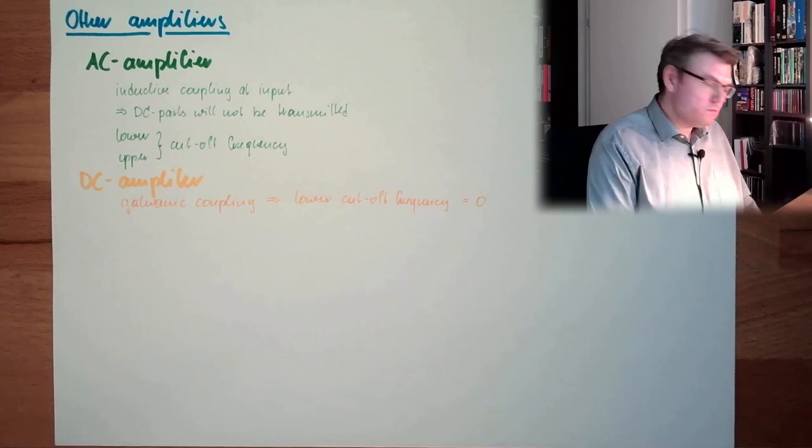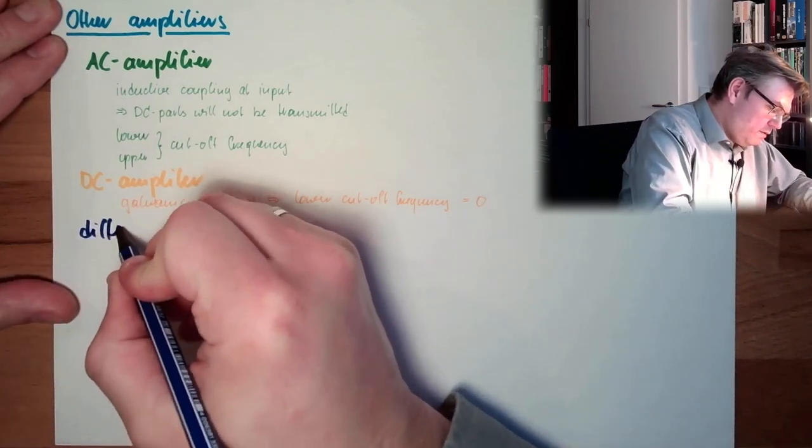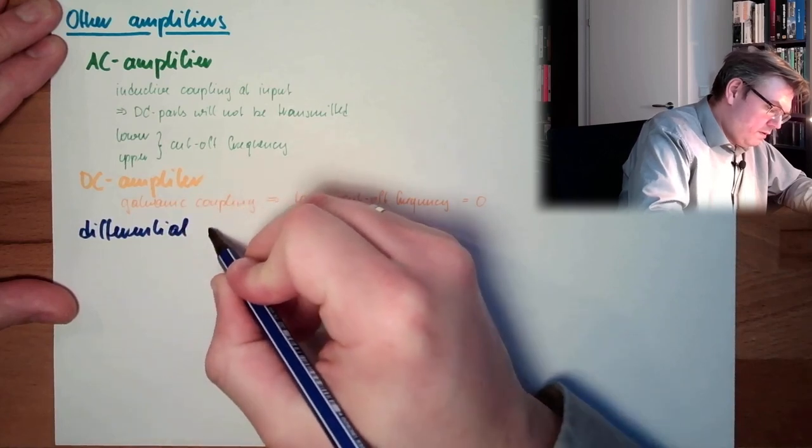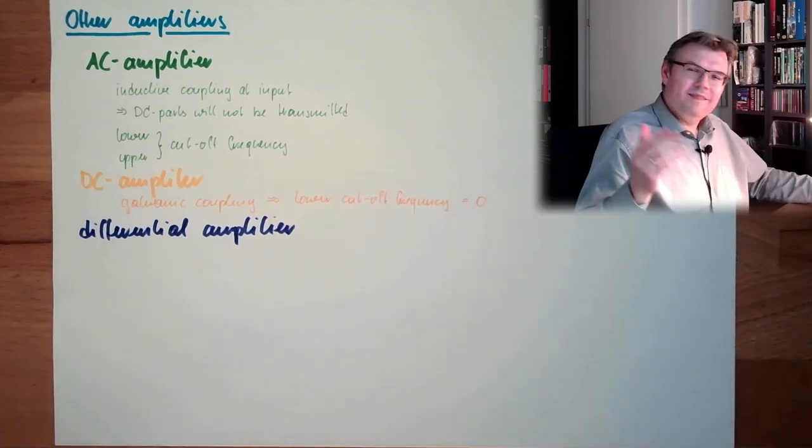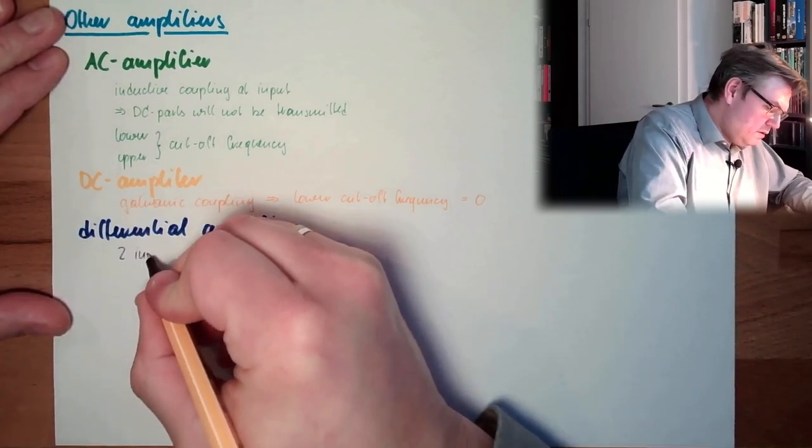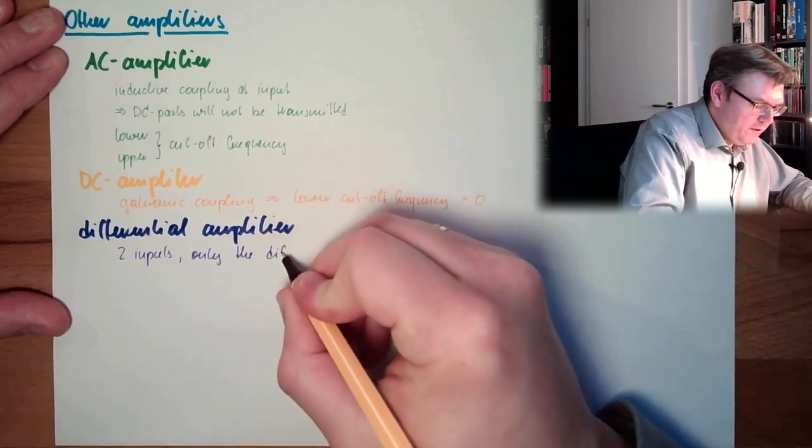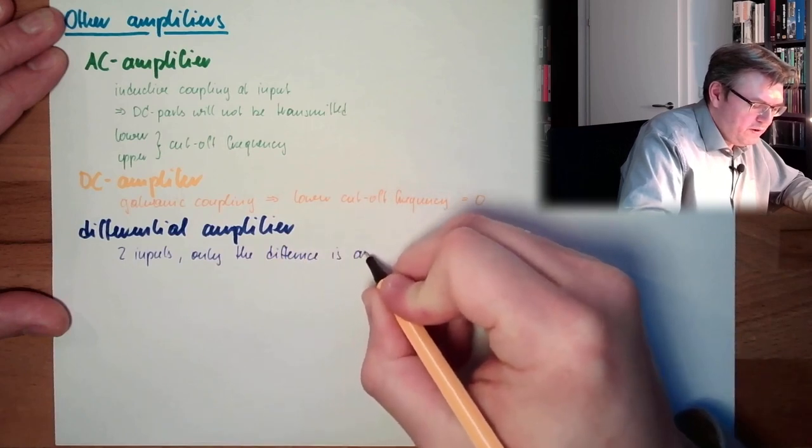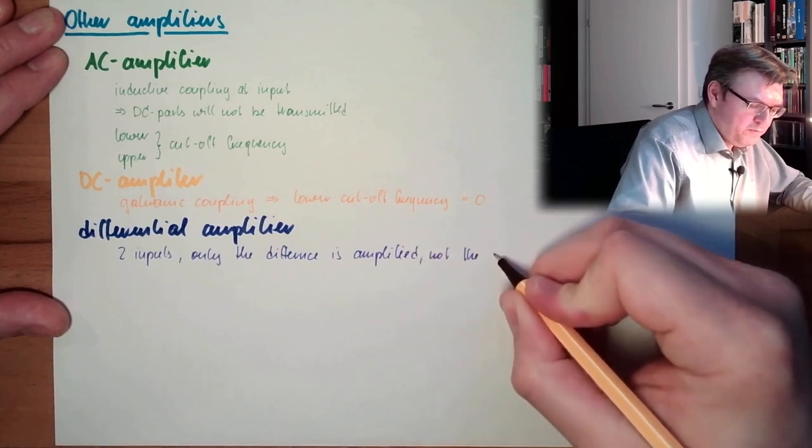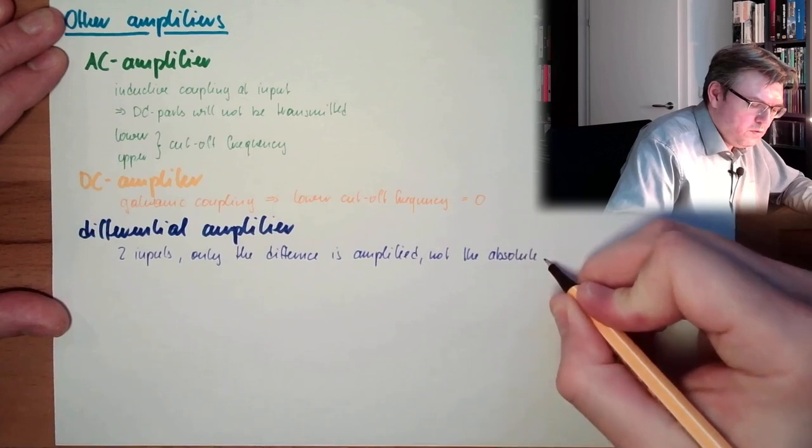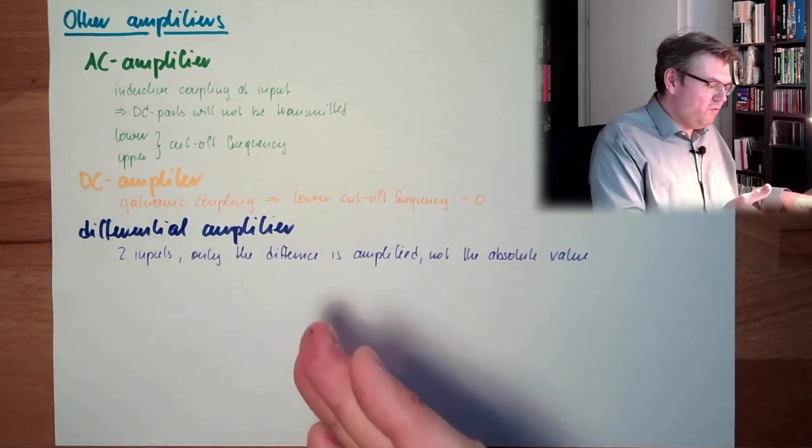But one thing we know is differential amplifier. This is like the operational amplifier. It has two inputs. So only the difference between the two input signals, not the absolute value. So only the difference between the two input signals. This is called differential amplifier.